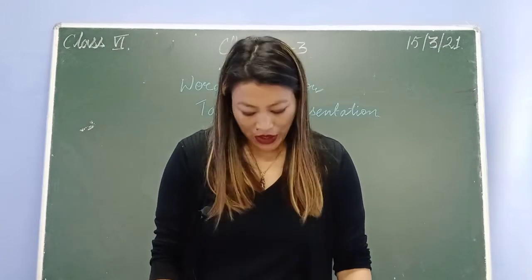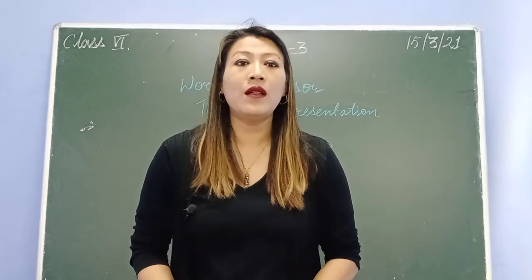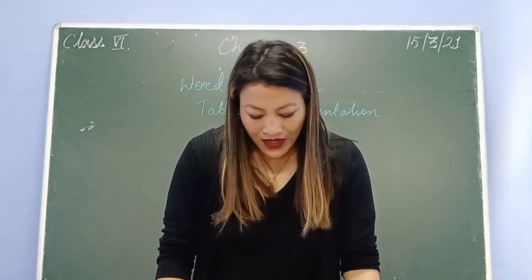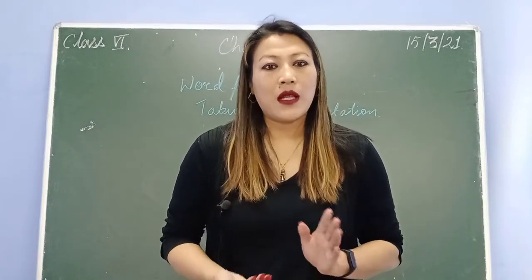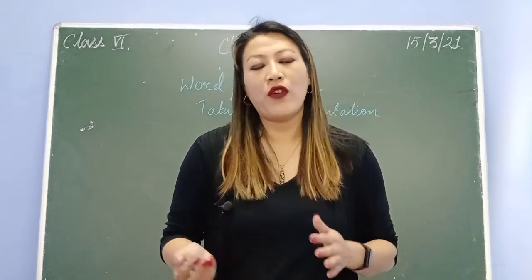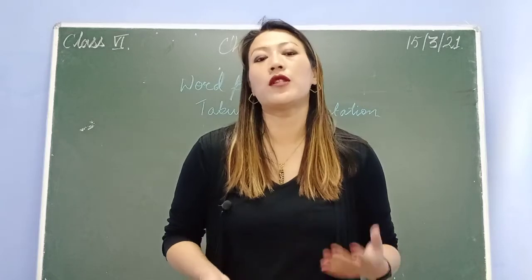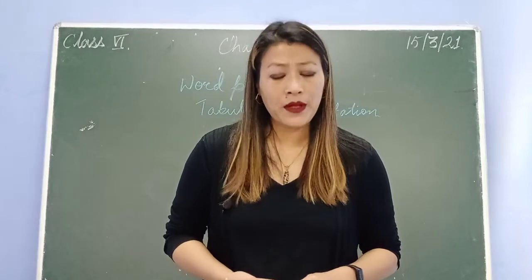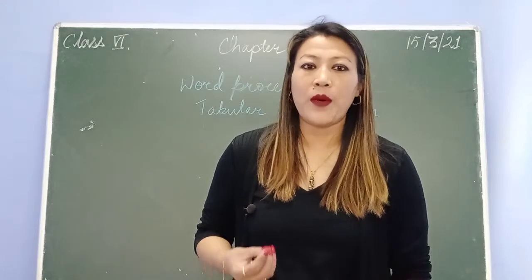If you have your book, turn to page number 27. Chapter 3 is about Word Processor — Microsoft Word. A table is one of the most important features in Microsoft Word for presenting information in a tabular form. In class 5 we already finished a chapter on Microsoft Word where we learned about its features, but in class 6 there is an added feature: the table, or tabular presentation.